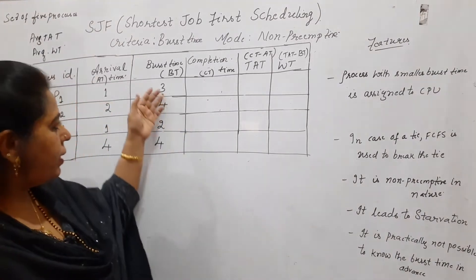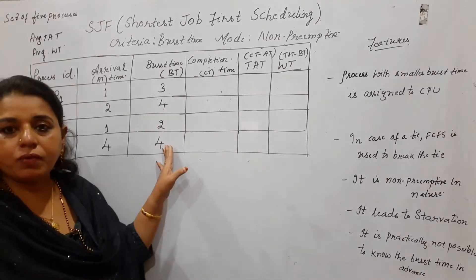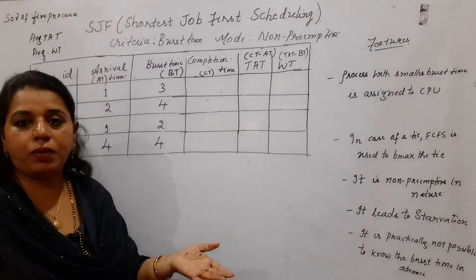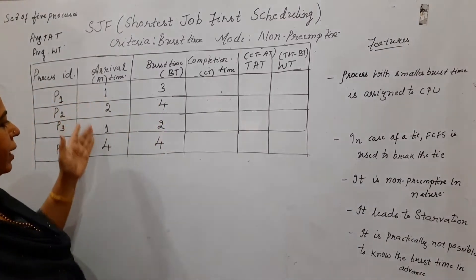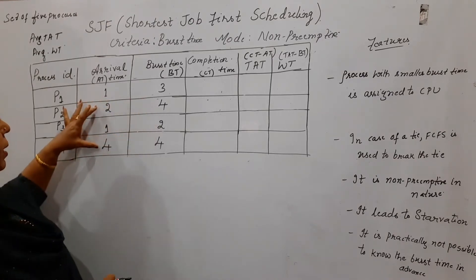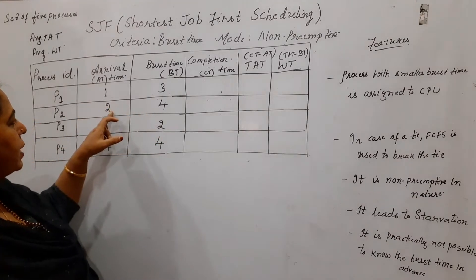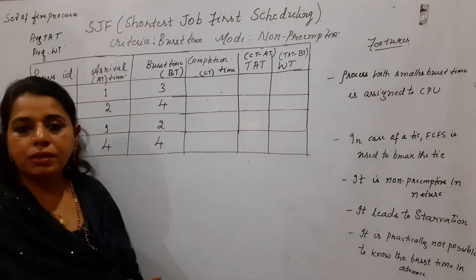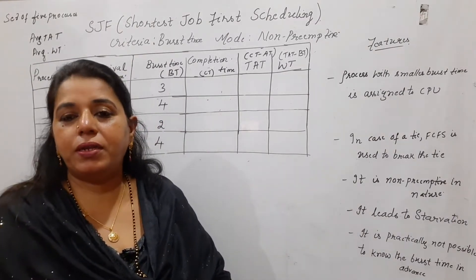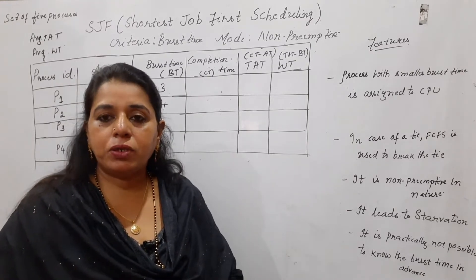If there is a tie — suppose at any point two processes have the same burst time — then the tie can be broken using FCFS scheduling. Look at the arrival time: if they have arrived at different times, the process which arrived first will get the CPU. It is non-preemptive, so once the CPU is assigned, it will complete its job and then exit.